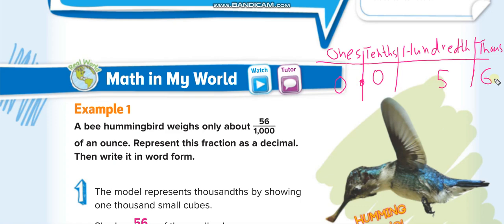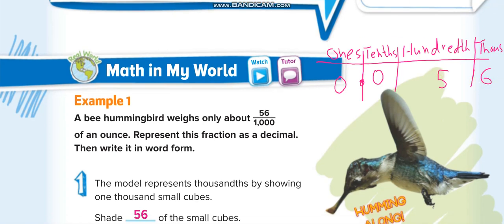The last digit goes in the place according to its denominator — the denominator is 1000, so 6 comes in the thousandths place, then 5 comes before it, and we fill the remaining places with zero. So zero point zero five six.